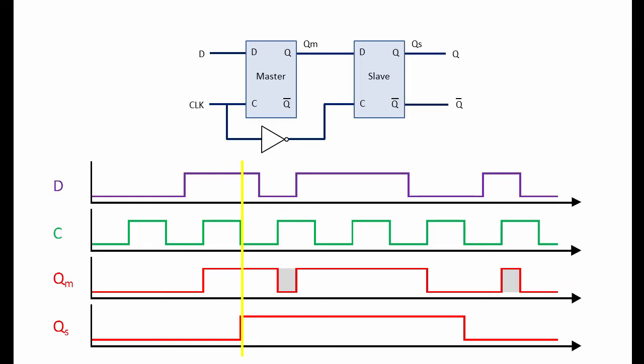Notice that QM, the master's output, cannot be changed now because C is low. This means that changes to the input of the flip-flop cannot impact on the output at this point. Also notice that the output of the flip-flop has been delayed by half a clock cycle.